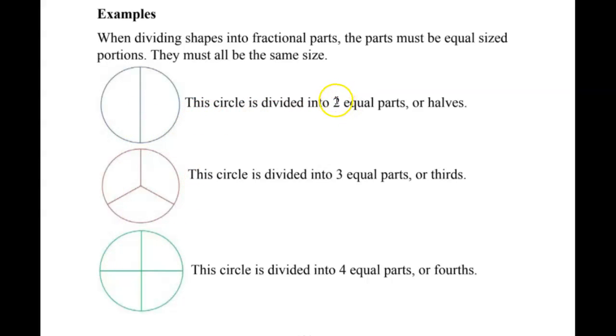This circle is divided into two equal parts, or halves. There's two halves here. Line is down the middle. This circle is divided into three equal parts, so all these pieces are equal. They're about the same size. This is also called thirds.